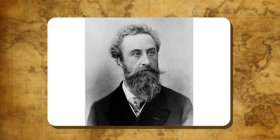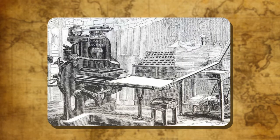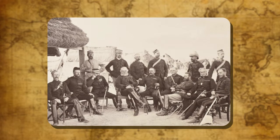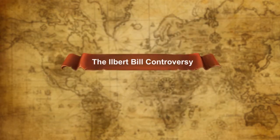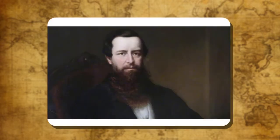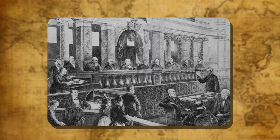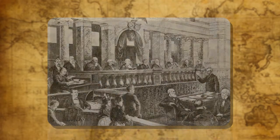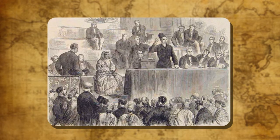Administration of Lytton. Lord Lytton arranged the Delhi Darbar at a time when a large part of India was in the grip of famine. He passed the Vernacular Press Act, which curbed the liberty of the Indian press. His Arms Act prevented Indians from keeping arms. All these measures created widespread discontent. The Ilbert Bill, presented during the Viceroyalty of Lord Ripon, tried to remove racial inequality between Indian and European judges. The Bill was opposed by British residents and ultimately withdrawn. Thus, various factors contributed to the rise of nationalism and the formation of the Indian National Congress.